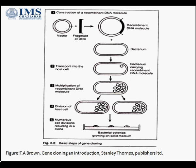This figure shows how a recombinant DNA molecule is introduced into the host and then selected. As you can see, there is a vector which is a vehicle that carries the fragment of DNA. When this fragment of DNA combines with a vector, it forms a recombinant DNA molecule. This recombinant DNA molecule is then introduced into the bacteria, which acts as a host.